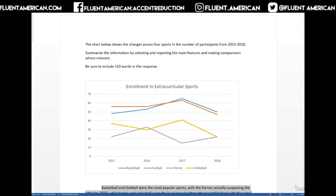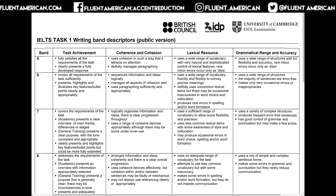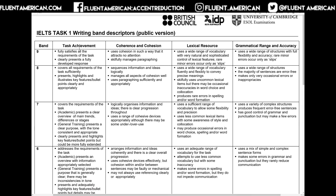Hello everyone. We're taking a look at another task 1 academic writing, this time with a line chart. We have enrollment in extracurricular sports — we need to summarize information, identify main features, make comparisons, and of course do it with at least 150 words. We'll be grading this task 1 using the standard IELTS rubric — the publicly available one. So we're grading things on task achievement.